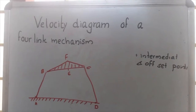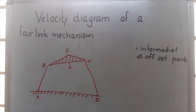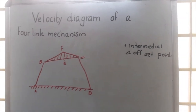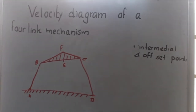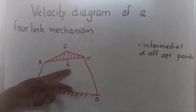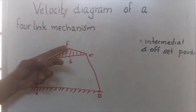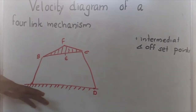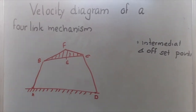We are going to discuss drawing the velocity diagram of a four-bar mechanism. We have provided an intermediate point E and an offset point F so that we can extend our studies to coupler points too.